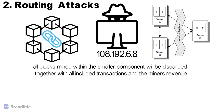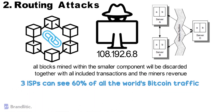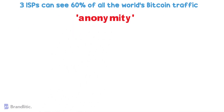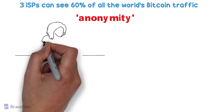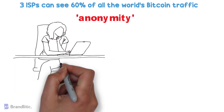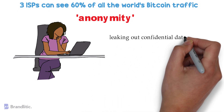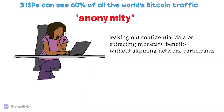For Bitcoin, it has been proven that most traffic between Bitcoin nodes travels through only a few ISPs — 60% of all possible Bitcoin connections cross just three ISPs. The dangerous aspect of routing attacks lies in their anonymity: participants cannot easily detect the threat because everything appears normal at the user's end. Routing attacks are generally employed for leaking confidential data or extracting monetary benefits without alarming network participants, making them detrimental and difficult to detect before significant damage is done.